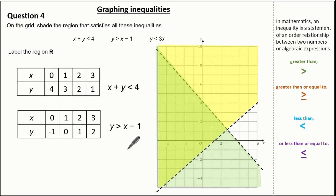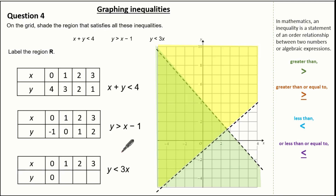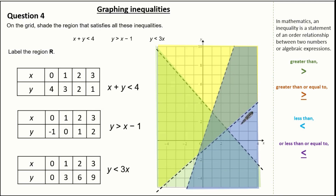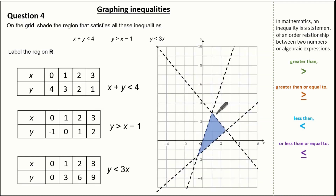Next, y is less than 3x. From the table: when x is 0, y is 0; when x is 1, y is 3; when x is 2, y is 6; when x is 3, y is 9. Plotting this with a dotted line because the inequality is less than — and because it's less than, I'm interested in being below the line. As you can see, there's a region which satisfies all three shadings — this is region R, as it satisfies all of my inequalities.